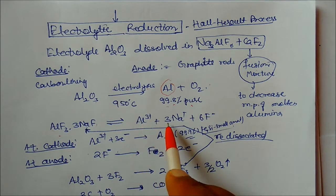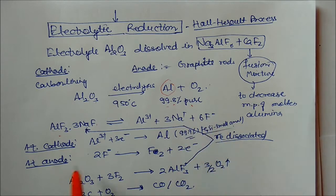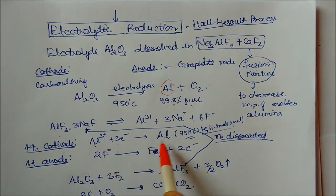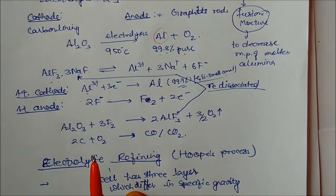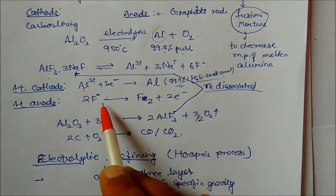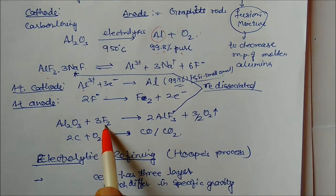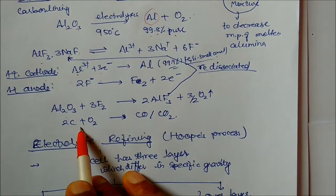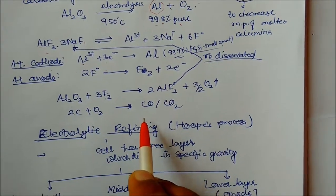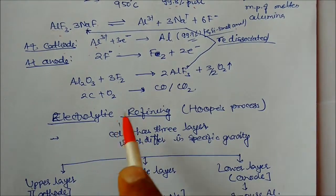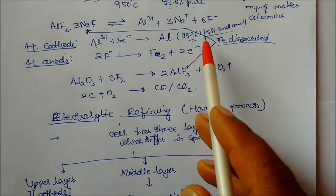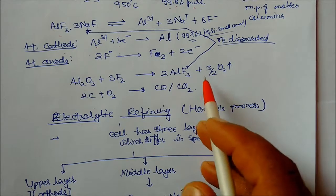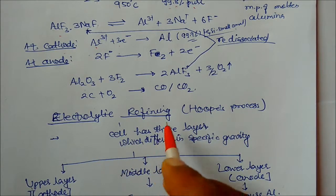At the cathode (carbon lining), reduction takes place and aluminium is deposited, giving about 99 percent pure aluminium. At the anode, fluoride ions are oxidized to release fluorine. Alumina in solution reacts with fluorine to form aluminium fluoride and oxygen. Carbon then reacts with oxygen to form CO2 and CO. The aluminium obtained is 99.9 percent pure.